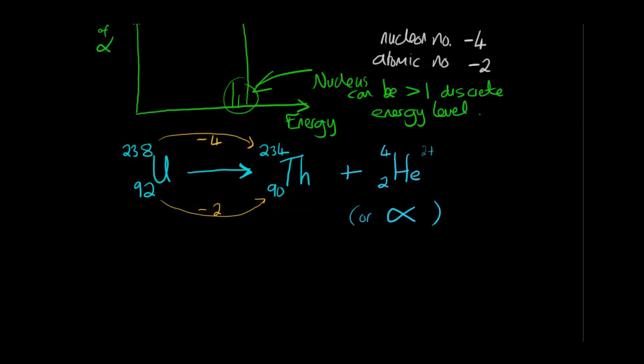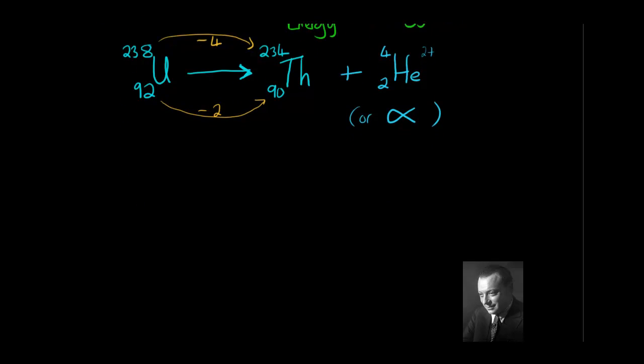So that's the alpha particle and that's alpha emission. Now let's take a look at what was going on in the 1930s where scientists were trying to understand the next type of emission from the nucleus which is called beta emission.